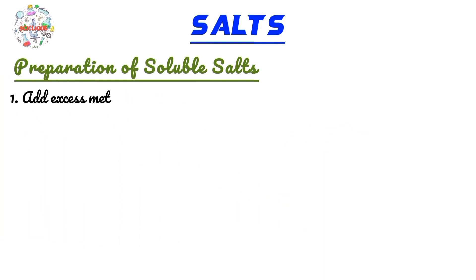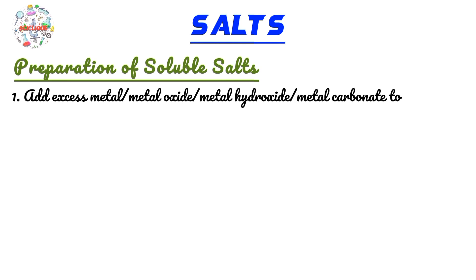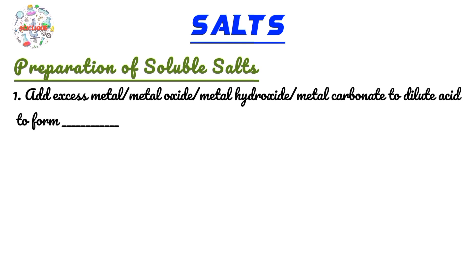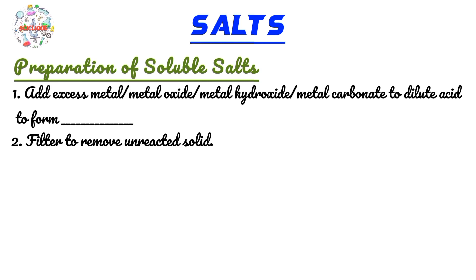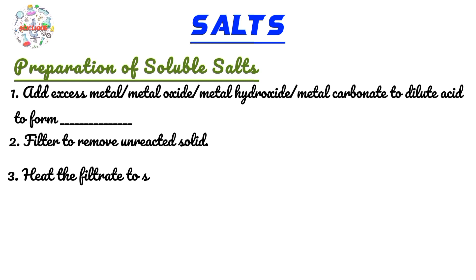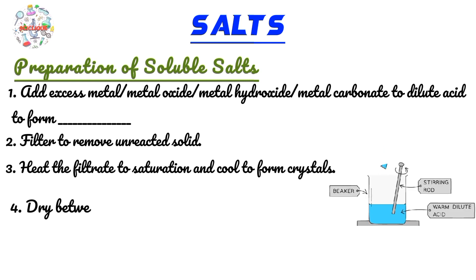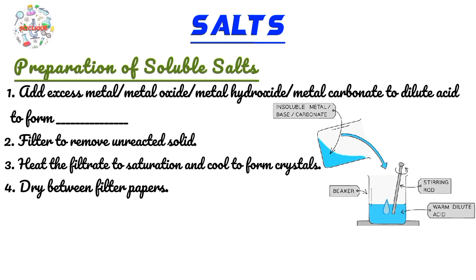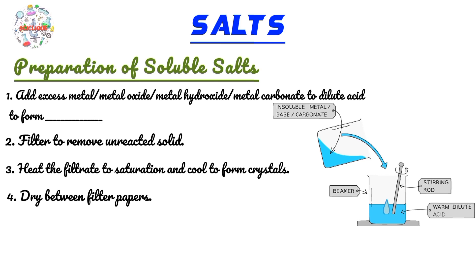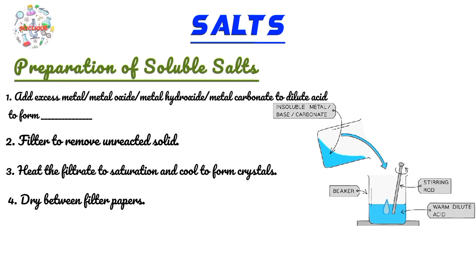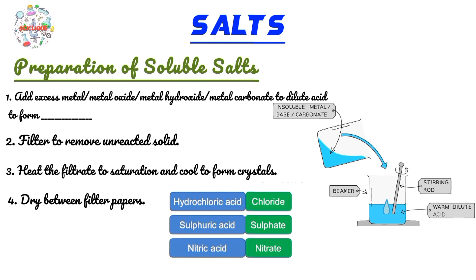This is the procedure to guide you when answering questions on preparation of soluble salts — not every single question, but most. Step one: add excess metal, metal oxide, metal hydroxide, or metal carbonate to the dilute acid. When it comes to the acid, you choose a corresponding acid. So if you're asked for a chloride salt, the suitable acid is hydrochloric acid; if you're asked for a nitrate, it's going to be nitric acid, and so on.